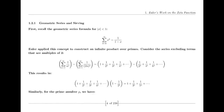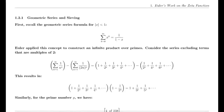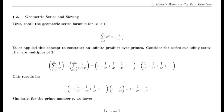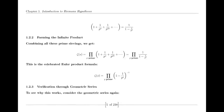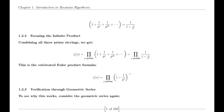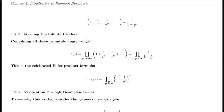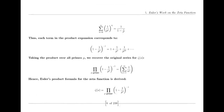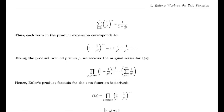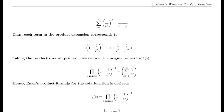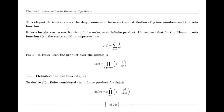Jacobi theta function. Riemann also made use of the Jacobi theta function, which has significant applications in various areas of mathematics. The theta function's series representation and modular properties were instrumental in Riemann's derivation of the functional equation for the zeta function. This equation is crucial for understanding the zeta function's behavior across the complex plane and highlights its intricate connections to other mathematical functions.